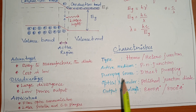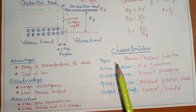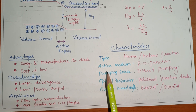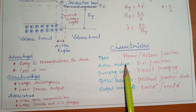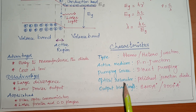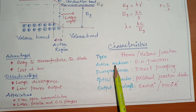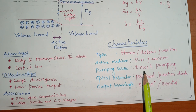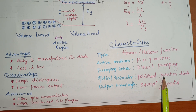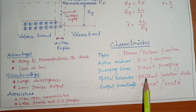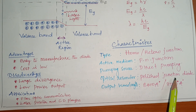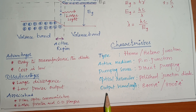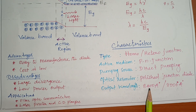To summarize the homo junction semiconductor laser, the three major components are: active medium — the p-n junction; pumping source — direct electric pumping; and optical resonator — the well-polished junction diode faces act as mirrors. The output wavelength is approximately 8400 Angstroms.